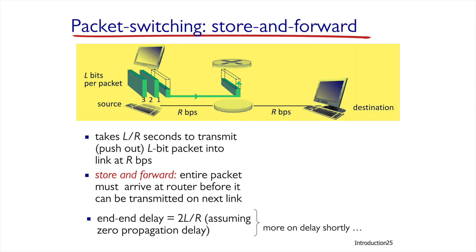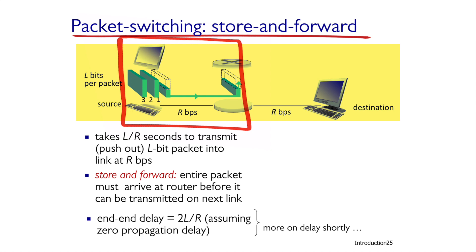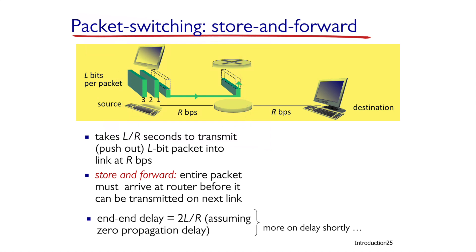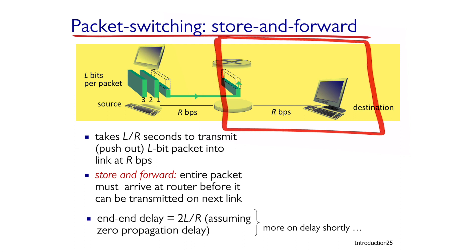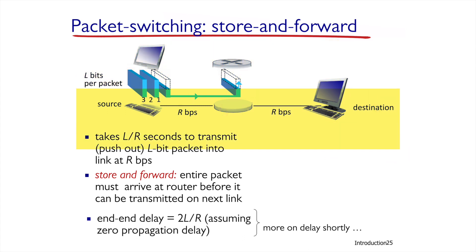If we look at an example where there is exactly one router between the sending and receiving point, the total time for the entire process is: a full transmission of the message from the transmitting point, receiving the full message in the router, and then transmission of the message from the router to the receiving point. The total process has twice the transmission of the message — once at the transmitting point and once in the router — giving us the formula 2L over R.